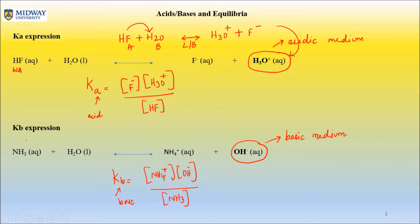Anything with nitrogen is a base, so the hydrogen gets donated here, giving us a conjugate acid and a conjugate base. In the previous case, we had a conjugate base and a conjugate acid. Writing Ka and Kb expressions is exactly the same process; it's just that now we are uniquely recognizing them as acidic or basic. Chances are I will ask you to write Ka or Kb rather than a general K expression.